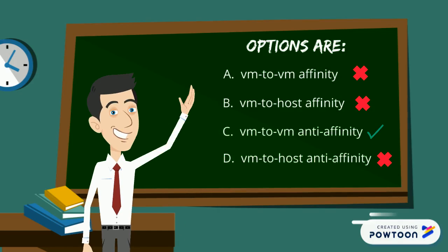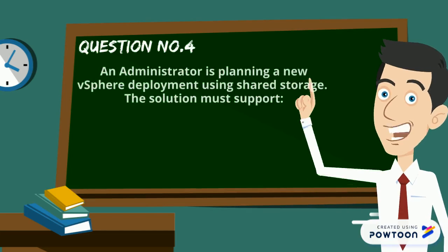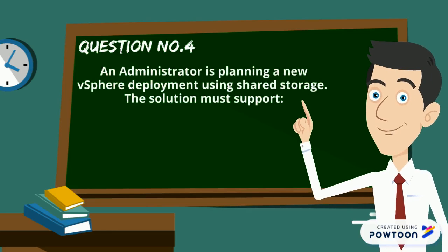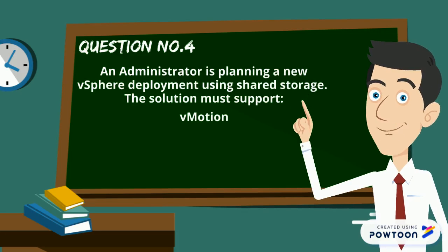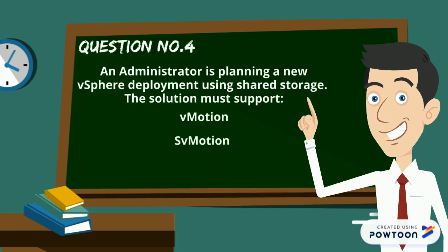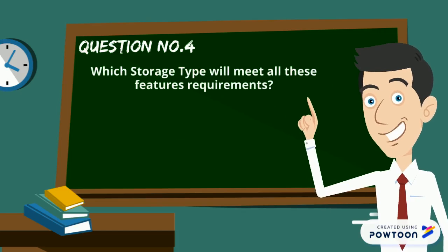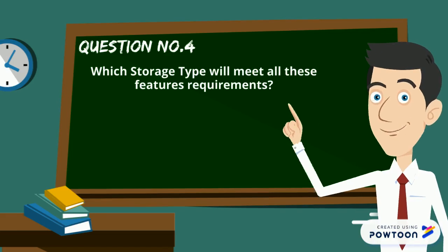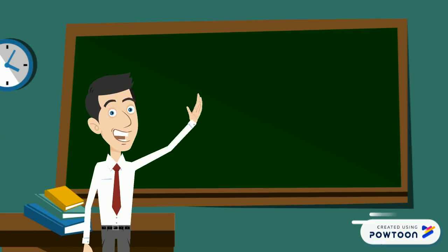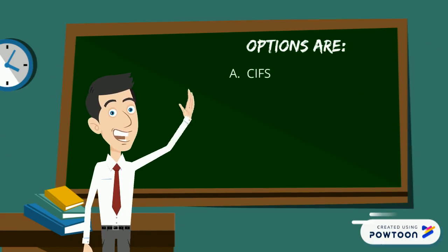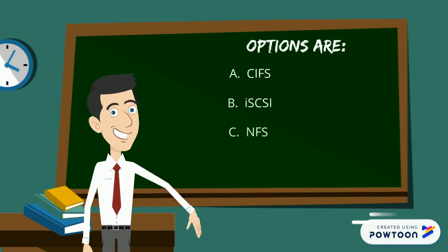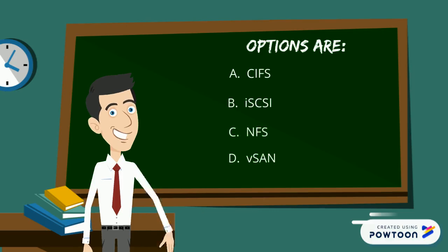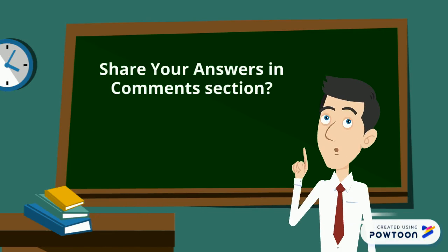Here is question number four: an administrator is planning a new vSphere deployment using shared storage. The solution must support vMotion, storage vMotion, and raw device mapping disks. Which storage type will meet all these feature requirements? The options are CIFS, iSCSI, NFS, and vSAN.